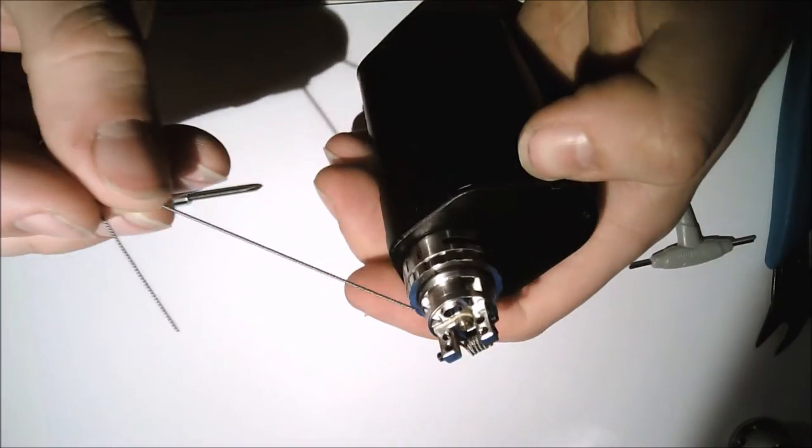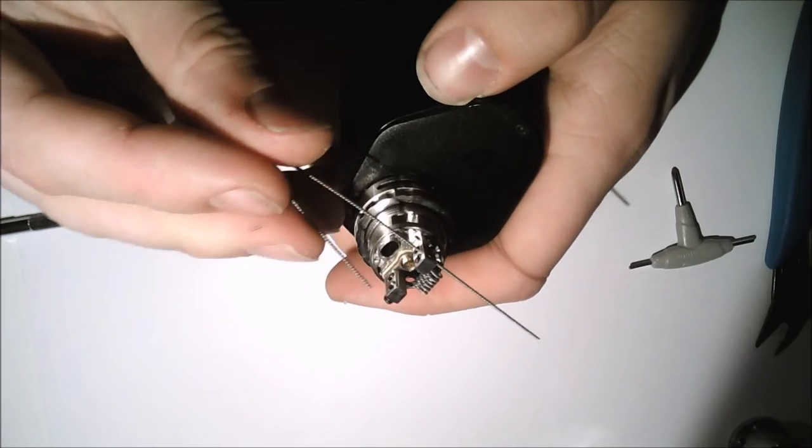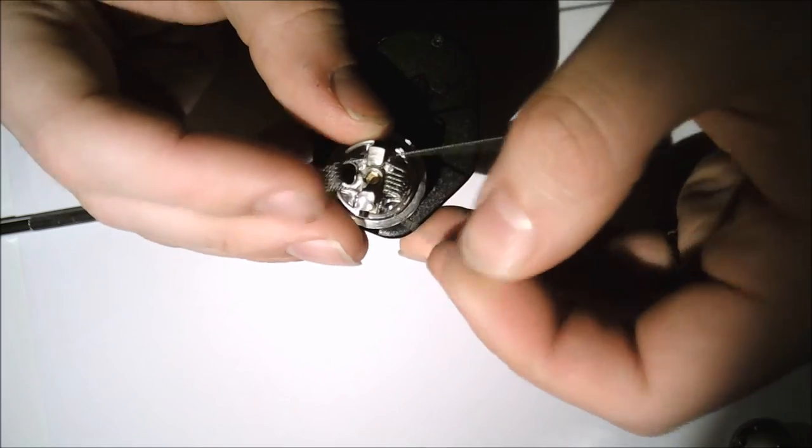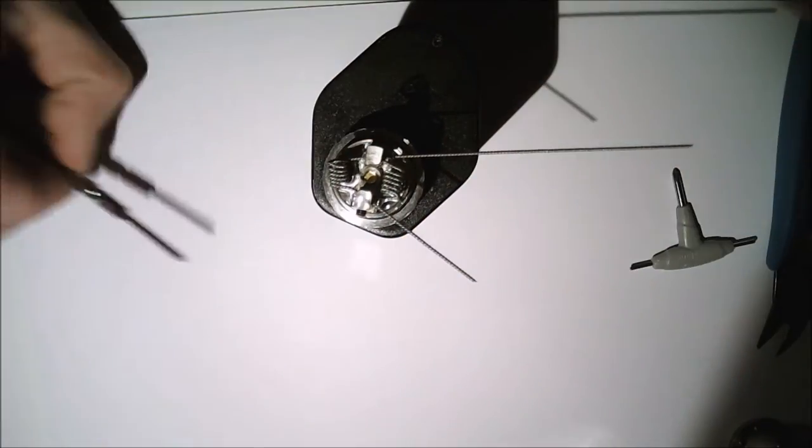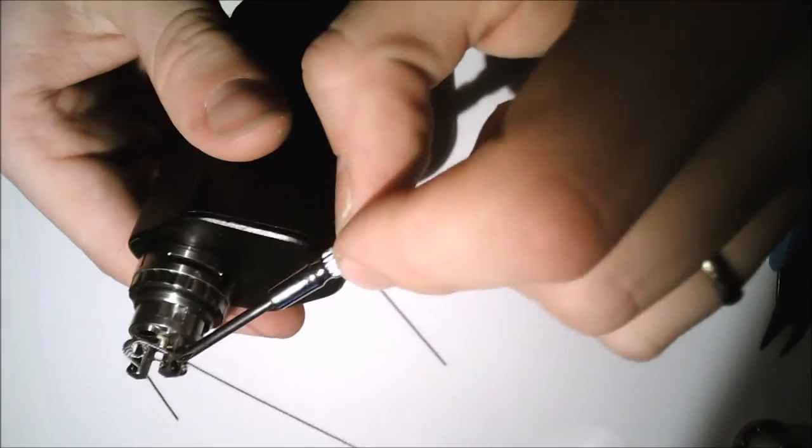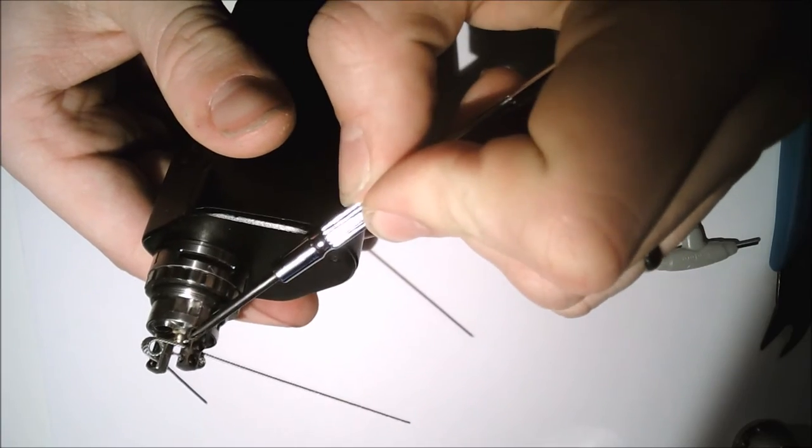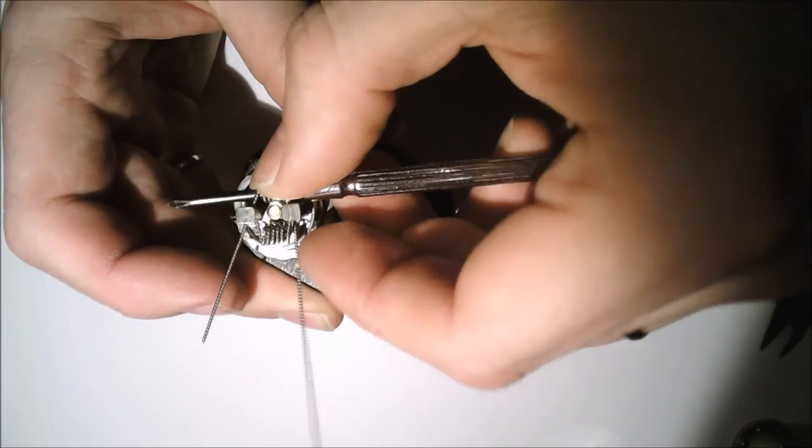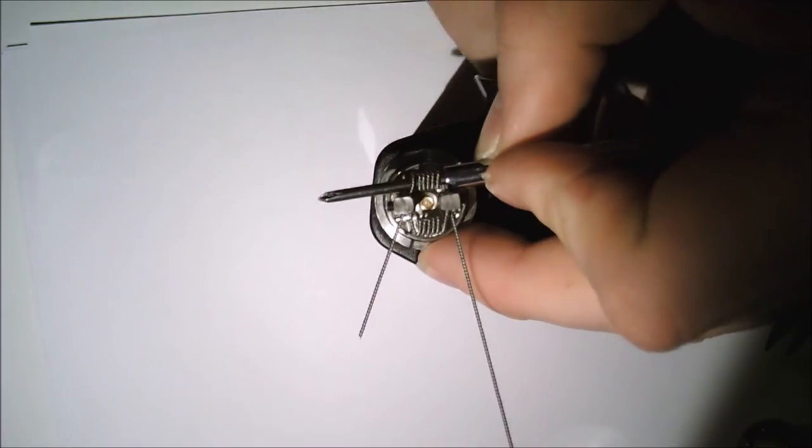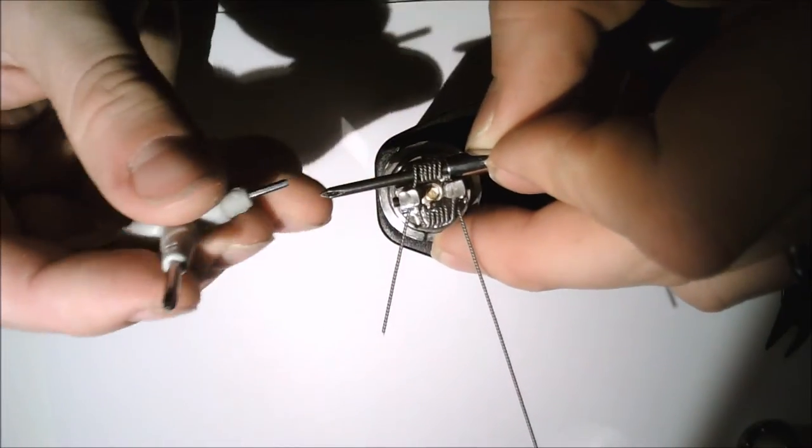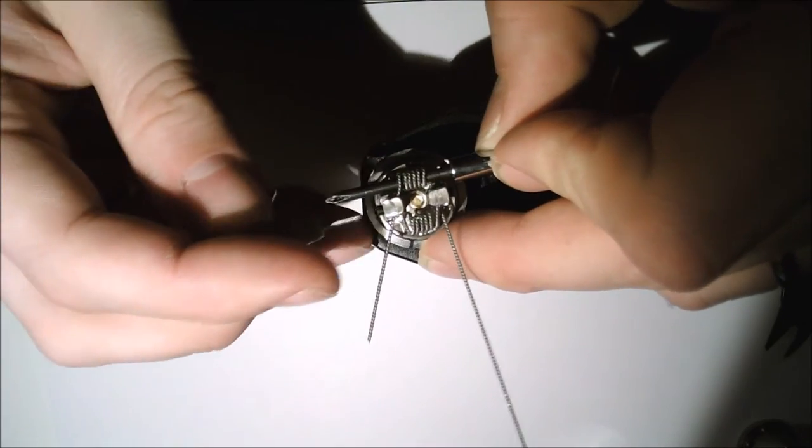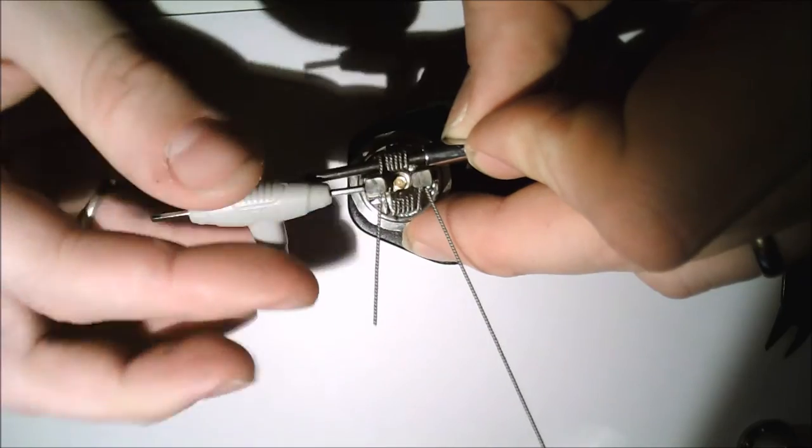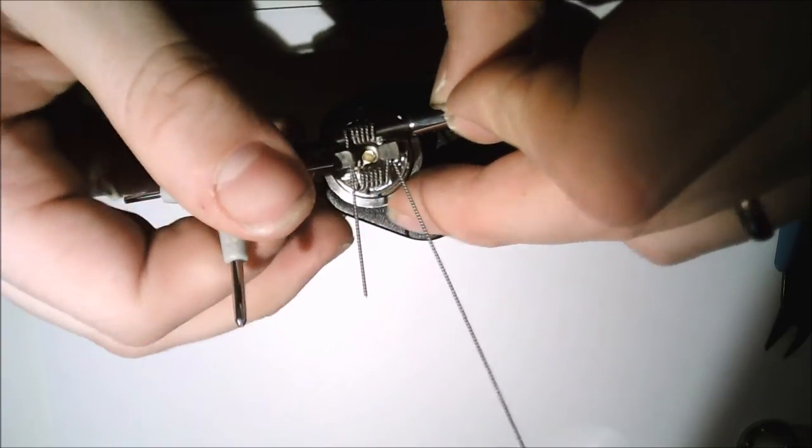And then we just repeat the process for this side. Again, really easy, putting the bottom lead that's coming out of the bottom way through that side. Hold that in nice and tightly so that you can screw it up. Easy as that.